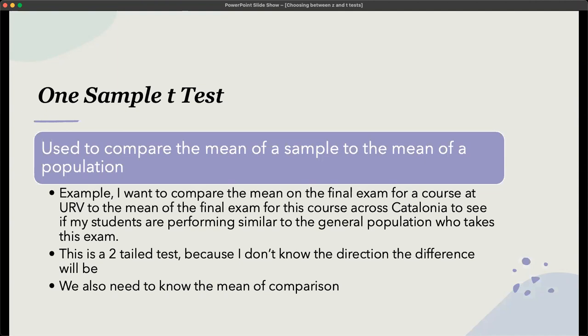But for a one sample t-test, again, you're using this to compare the mean of a sample to the mean of a population. So the example which I sort of already gave was I want to compare the mean on the final exam of a course at URV to the mean of a final exam for the course across Catalonia to see if my students are performing similarly to the general population who takes this exam.